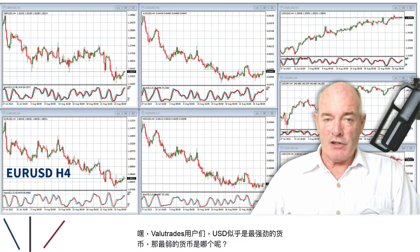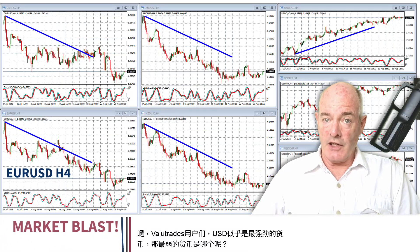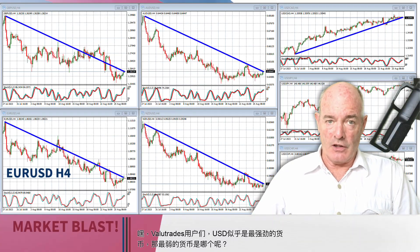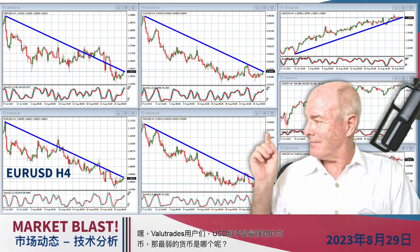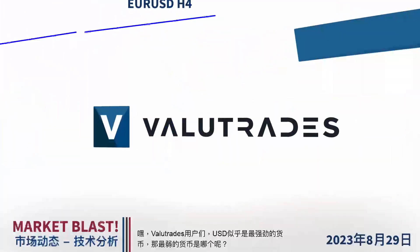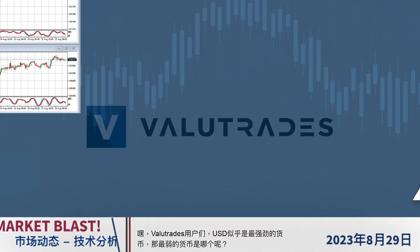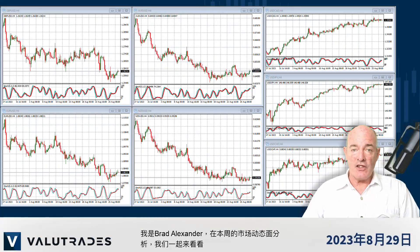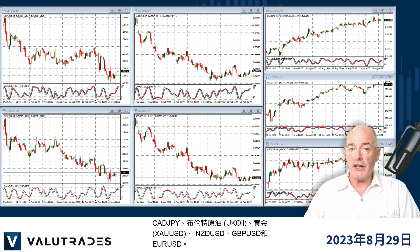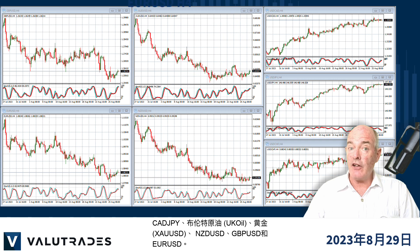Hey Value Traders, it looks like the US Dollar is our strongest currency. Which one is the weakest? I'm Brad Alexander and in this week's Market Blast Technicals, let's take a look at CAD Yen, Brent Crude, Gold, Kiwi Dollar, Pound Dollar and Euro Dollar.